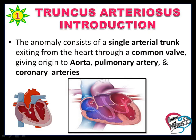Normally, the deoxygenated blood from the right ventricle is carried by the pulmonary artery to the pulmonary circulation, and the oxygenated blood from the ventricle is carried by the aorta to the systemic circulation.